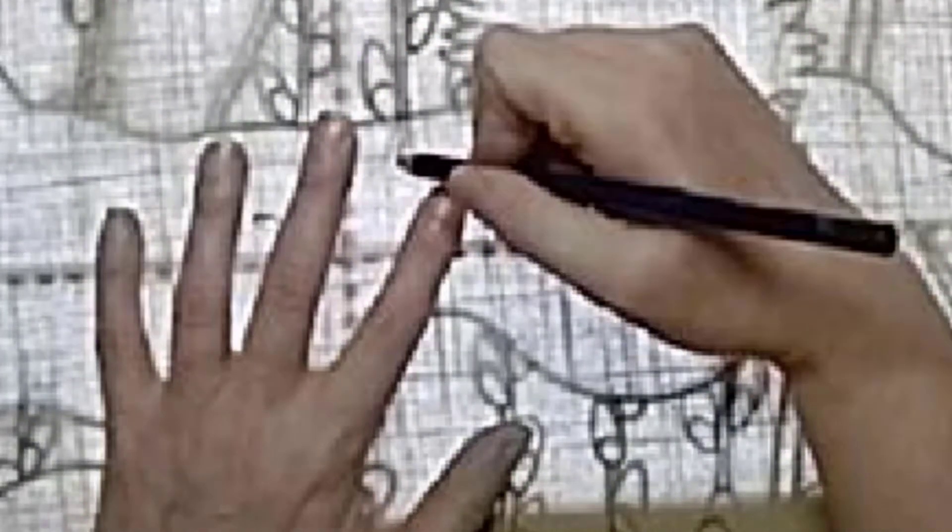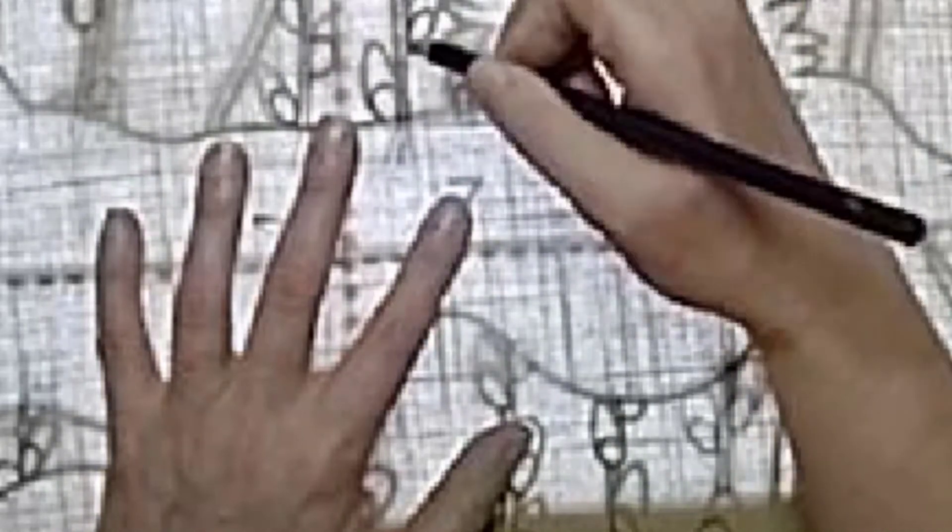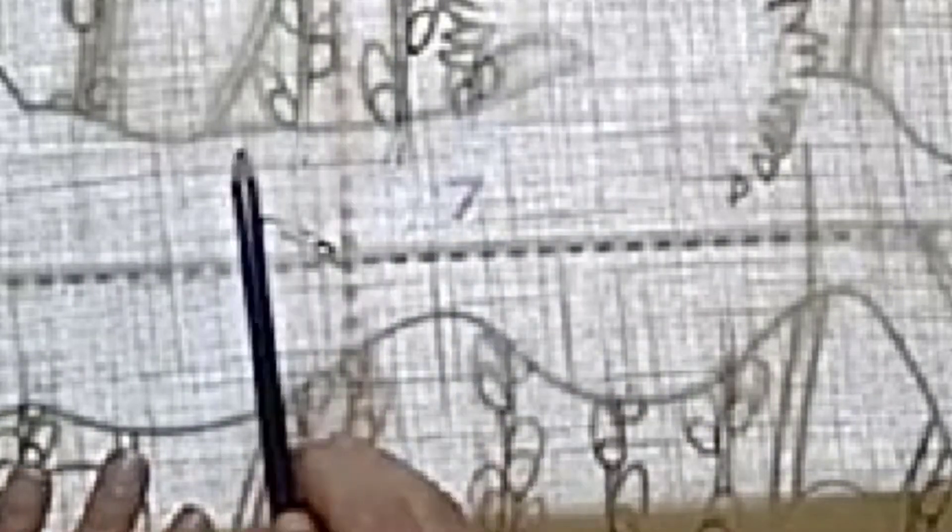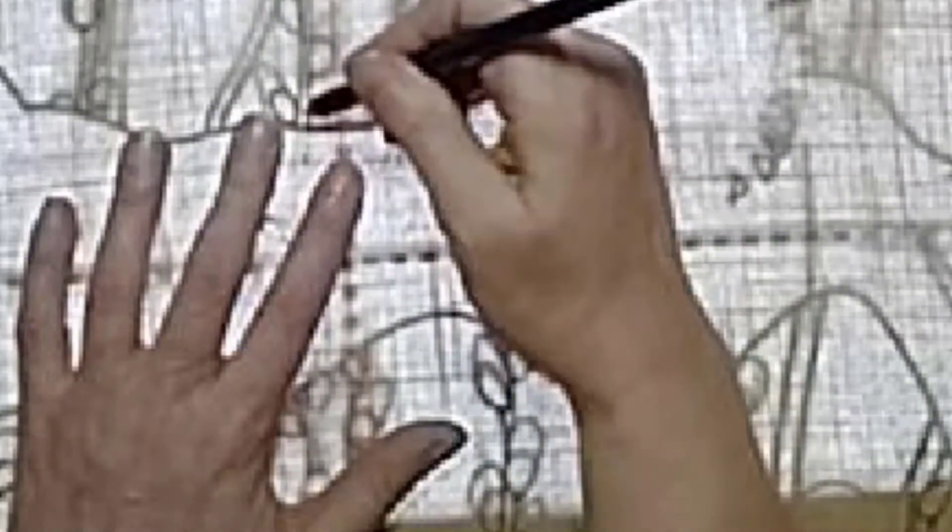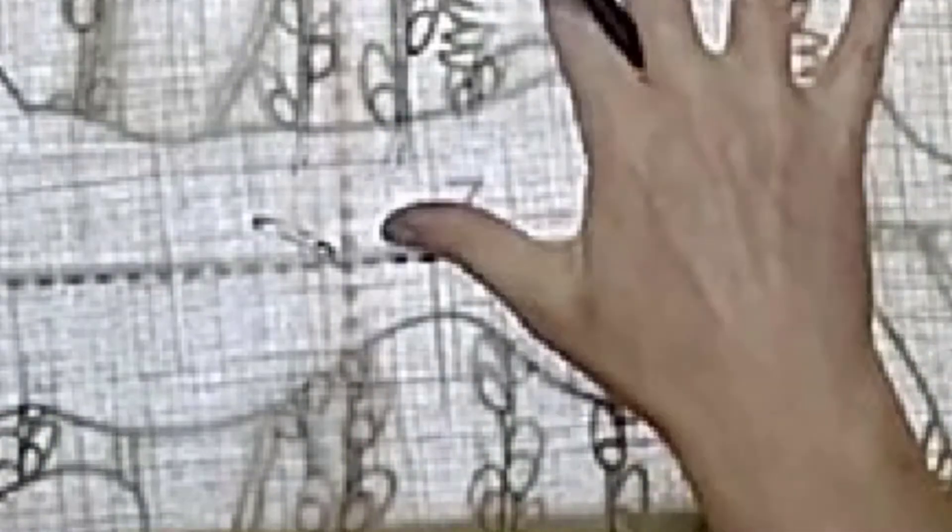When you're tracing and creating your applique pieces, extend the lines of your pussy willows a little bit beyond the edges and inside the edges of your hair and mushrooms and whatever they might cross behind. When you're painting them, paint behind those applique items.